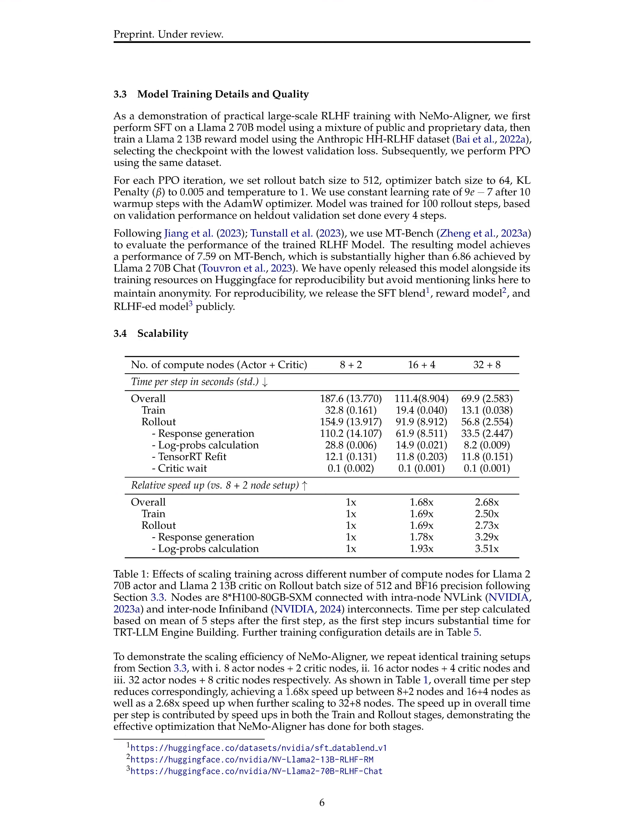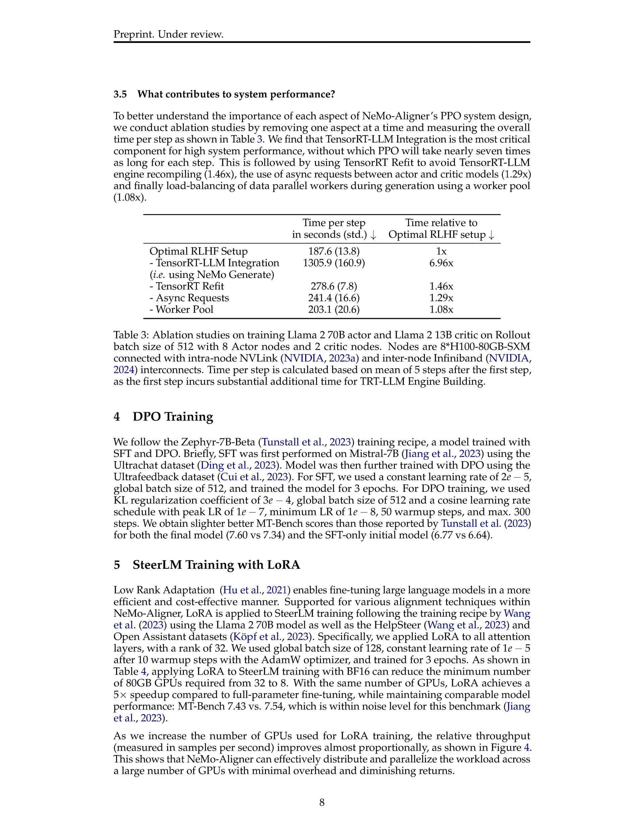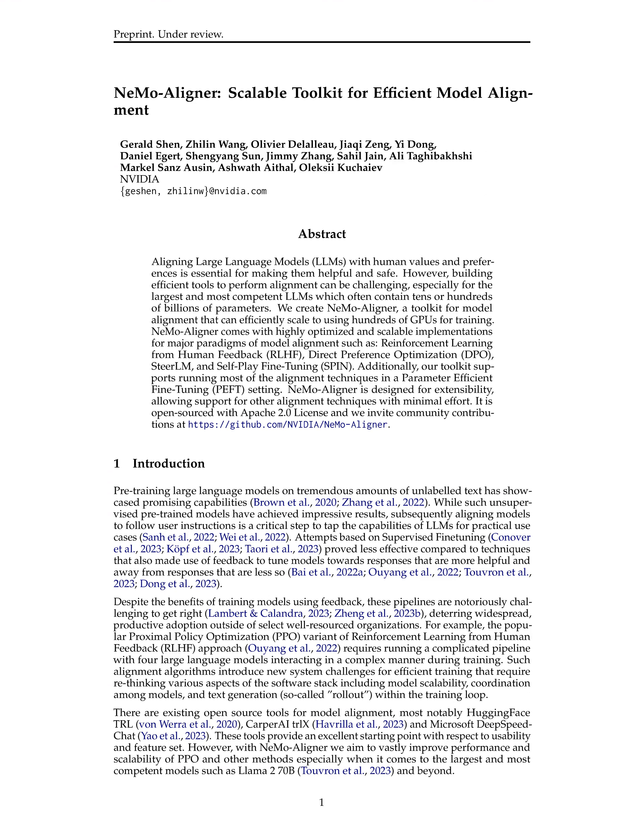The method demonstrates scalability by repeating training setups with varying numbers of actor and critic nodes, showing improved efficiency with increased node counts. Additionally, NEMO Aligner's system design components — such as TensorRT-LLM integration, TensorRT-REFIT, async requests between actor and critic models, and load balancing of data parallel workers — contribute to high system performance. The method's extensibility allows for easy modification and incorporation of various alignment techniques, making it a versatile and efficient tool for training large language models.